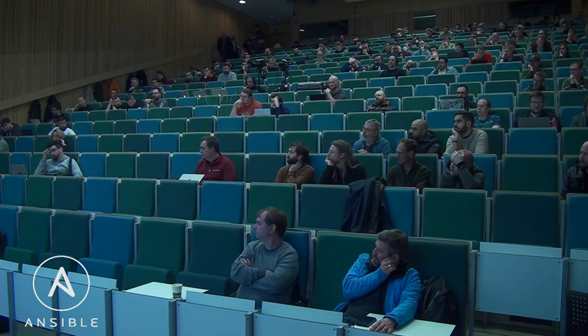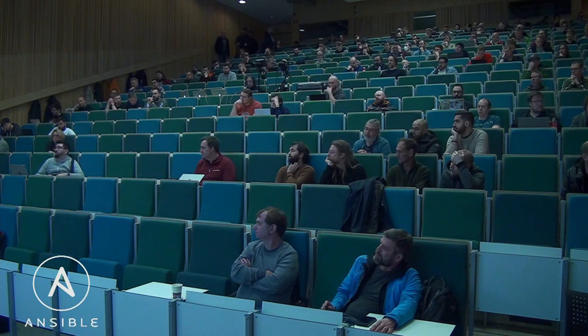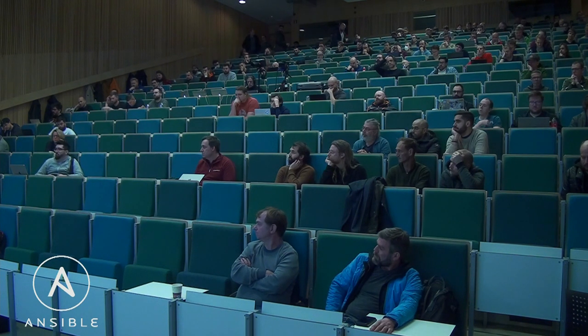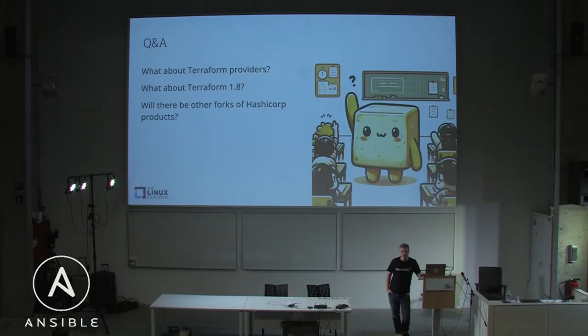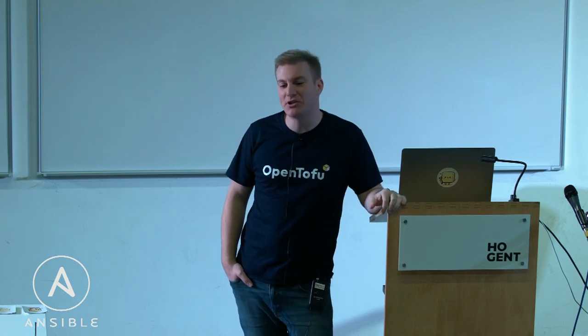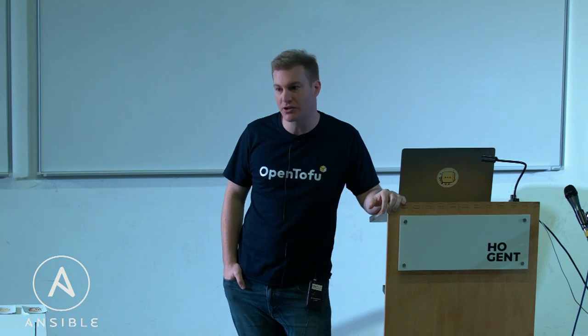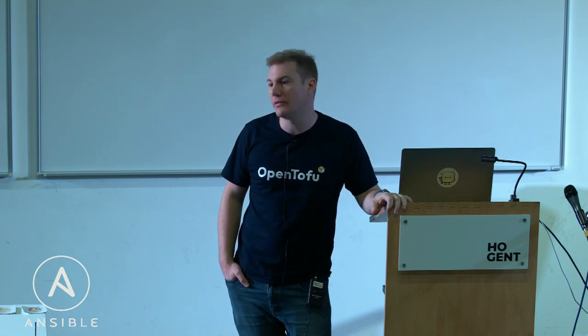Question: What happens if they change the license of the main providers — the ones under the HashiCorp namespace, like Google, Azure, and others? In that case, we will most likely have to fork those projects. I can't say much on that topic, but the cloud providers — they just want you to use more of their products. They have a vested interest in making sure that the providers support OpenTofu as well. I can't make any official announcements on that yet, but you can expect a lot of goodness to come out of that in the next couple of months.